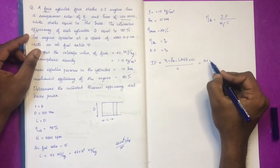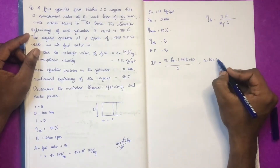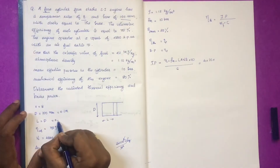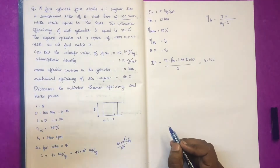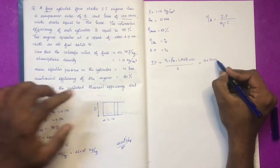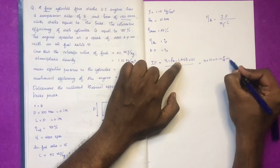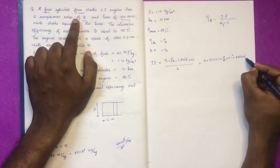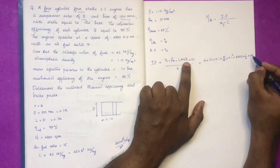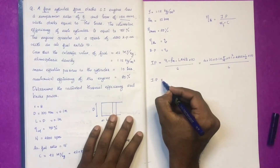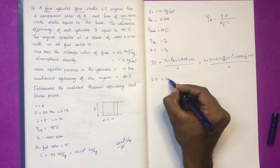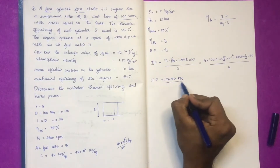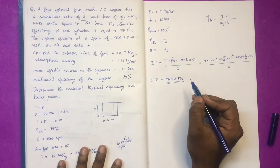Indicator power equals P_m (10 bar) × L (length of stroke = 0.1 m) × A (area = π/4 × D² = π/4 × 0.1²) × N × k, for a 4-stroke engine k = 1/2. The computed indicator power comes out to approximately 125.56 kW.